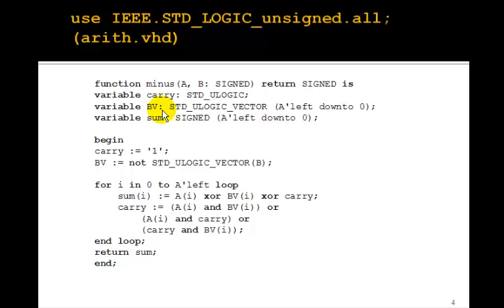They define the variable bv, and then look what they do. They set the carry to 1, and then they set bv to not standard logic vector b. They're converting b. Now, this is what? This is a 1's complement plus 1, which is a 2's complement. So they're taking the 2's complement of b,